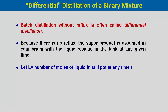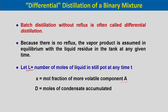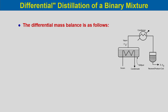Let L be the number of moles of liquid in the still pot at any time t. x is the mole fraction of the more volatile component A, D is the moles of condensate accumulated as product, and y* is the composition of the equilibrium vapour. The differential mass balance is: −dL = dD, meaning the differential amount of liquid vaporized goes to the distillate, with the negative sign because the liquid is gradually decreasing.